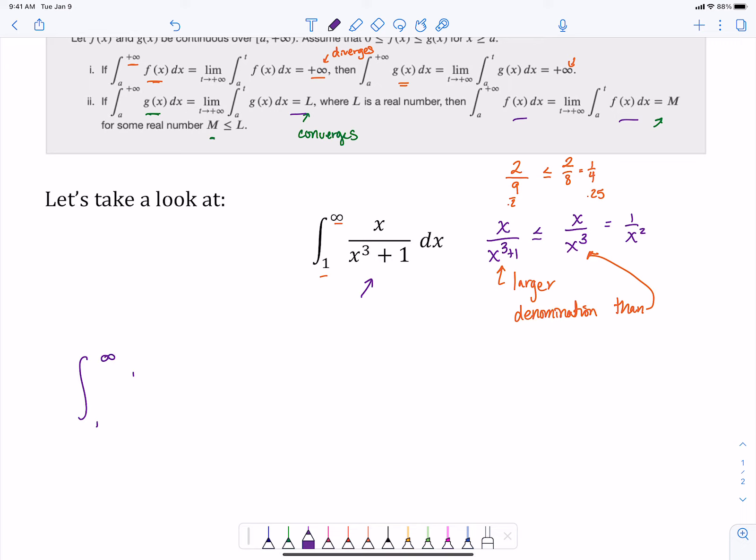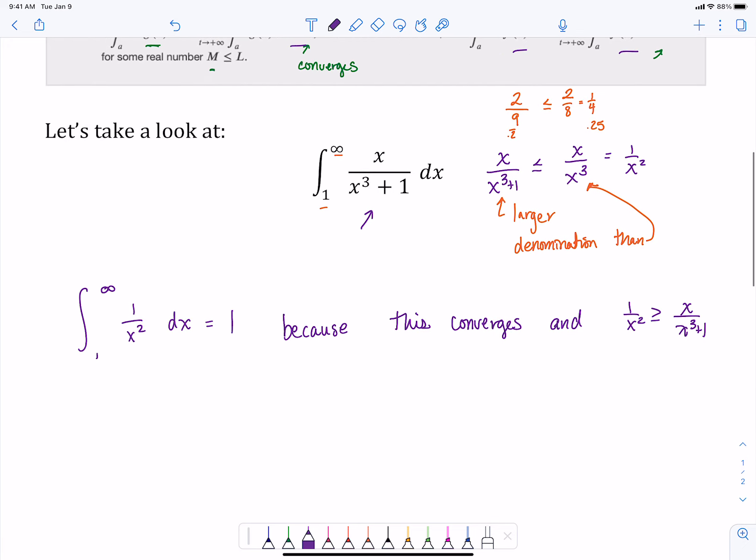So if you remember, we actually found the integral of 1 over x squared dx in our very first video, and we got that this was 1. So because this integral converges and 1 over x squared is greater than or equal to x over x cubed plus 1, then the integral from 1 to infinity of x over x cubed plus 1 also converges. Now sadly, it doesn't tell us what it converges to, it just tells us that it converges. So now we could, if we wanted to, maybe spend some more time figuring out what this integral might be. We're not going to do that right now, but we could. Right now all we want to know is, does it converge or not? Yes, it does.